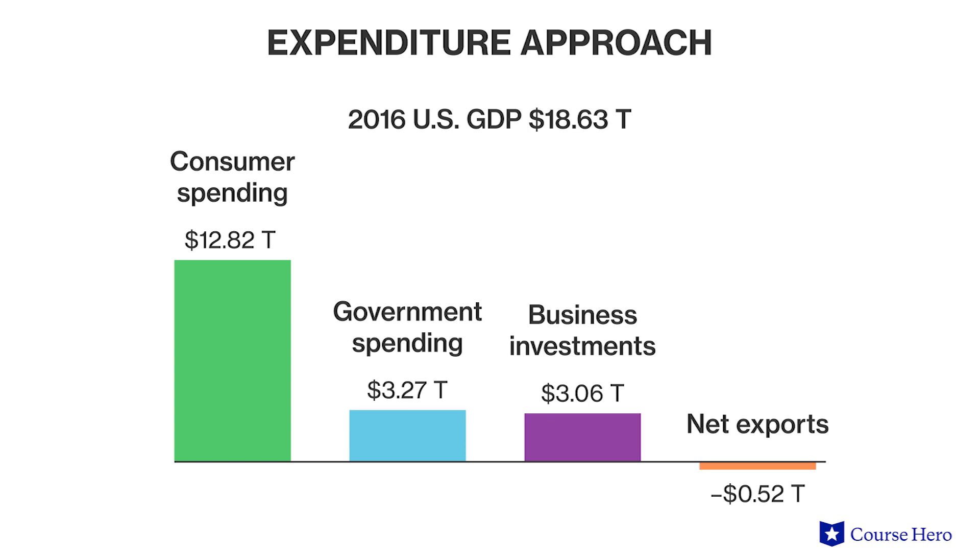The largest portion of GDP using this approach is consumer spending. While this portion is the main driver of the economy, it accounts for roughly two thirds of total spending in the United States. It usually remains stable over time.